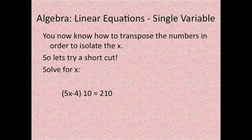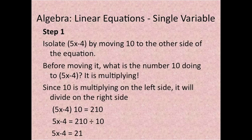You now know how to transpose the numbers in order to isolate the x. So let's try a shortcut. Solve for x: 5x minus 4 times 10 equals 210.